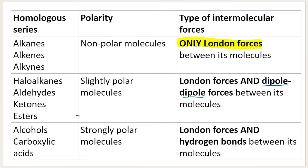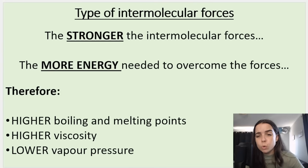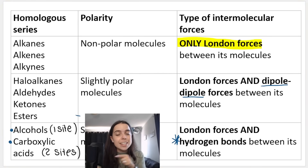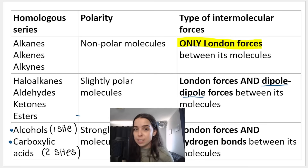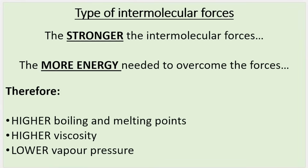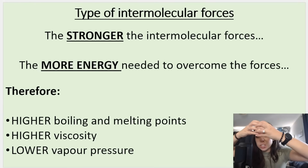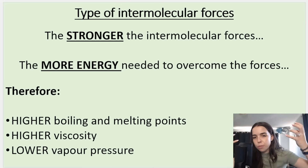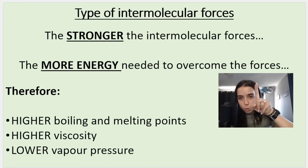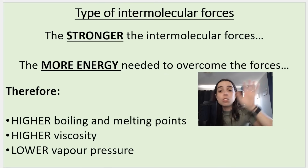The last two — alcohols and carboxylic acids — have hydrogen bonds and London forces, giving them the strongest intermolecular forces. Alcohols have one site for hydrogen bonding; carboxylic acids have two sites. The stronger the intermolecular forces, the more energy is needed to overcome them. You never say 'break' the forces — we overcome them or weaken them. These are not bonds, they are forces.